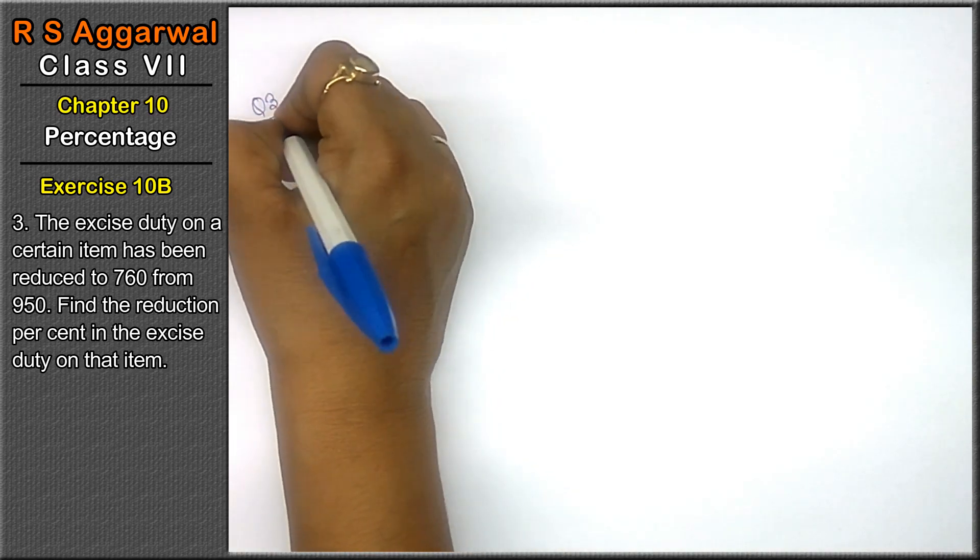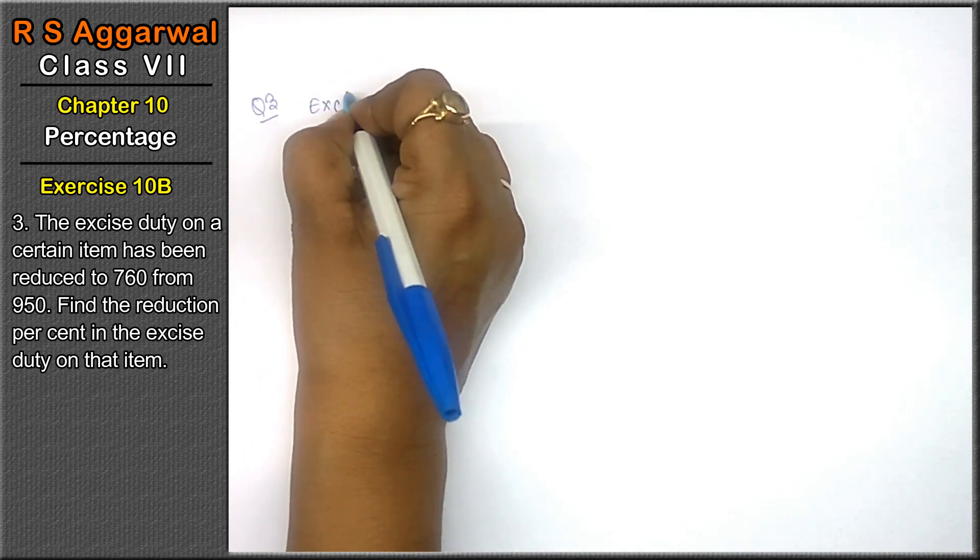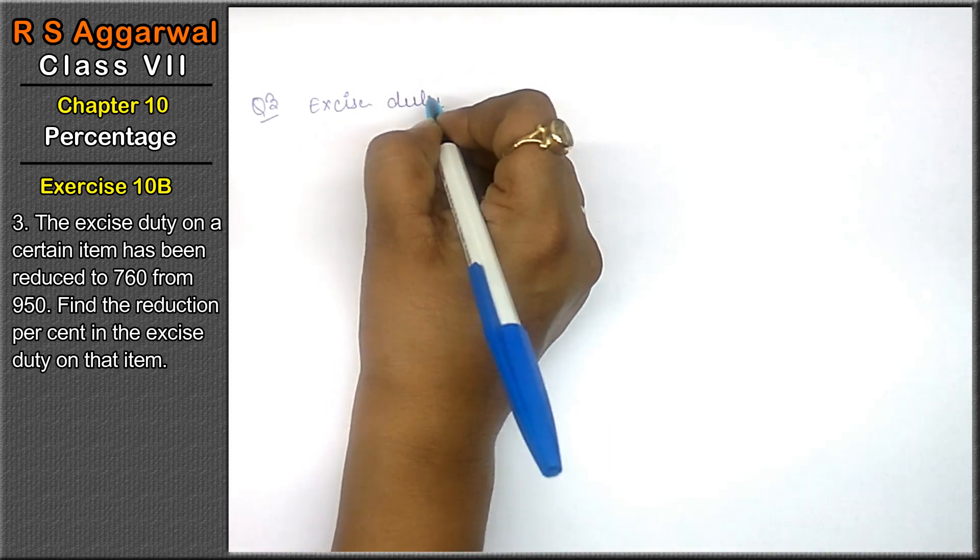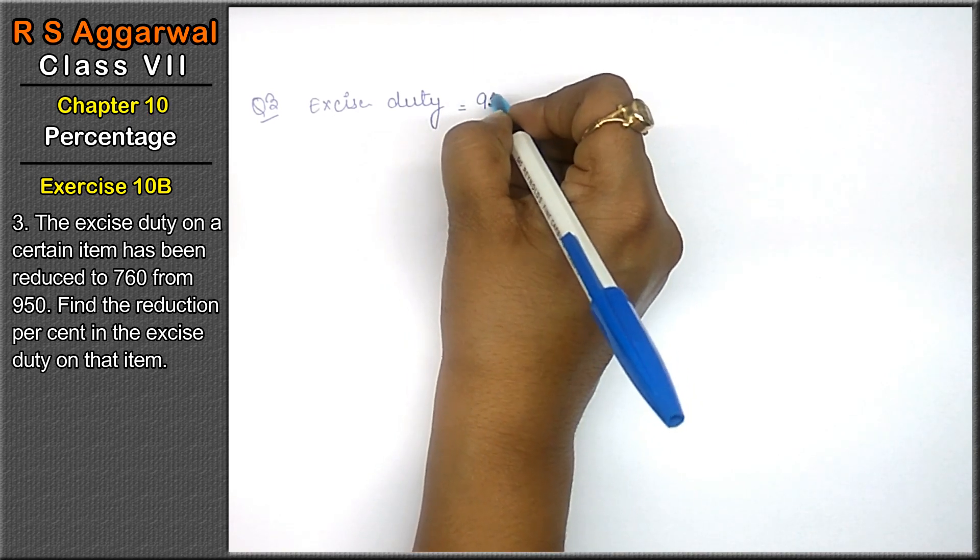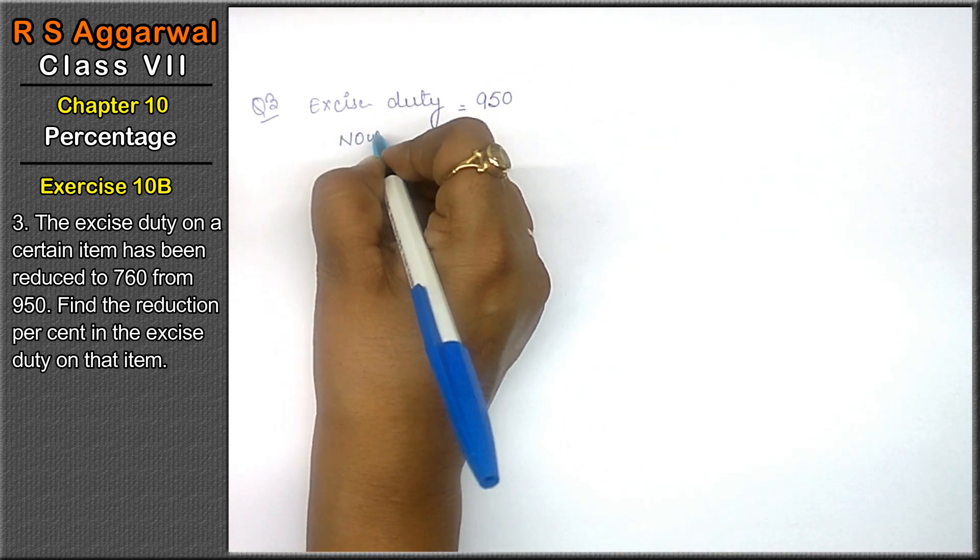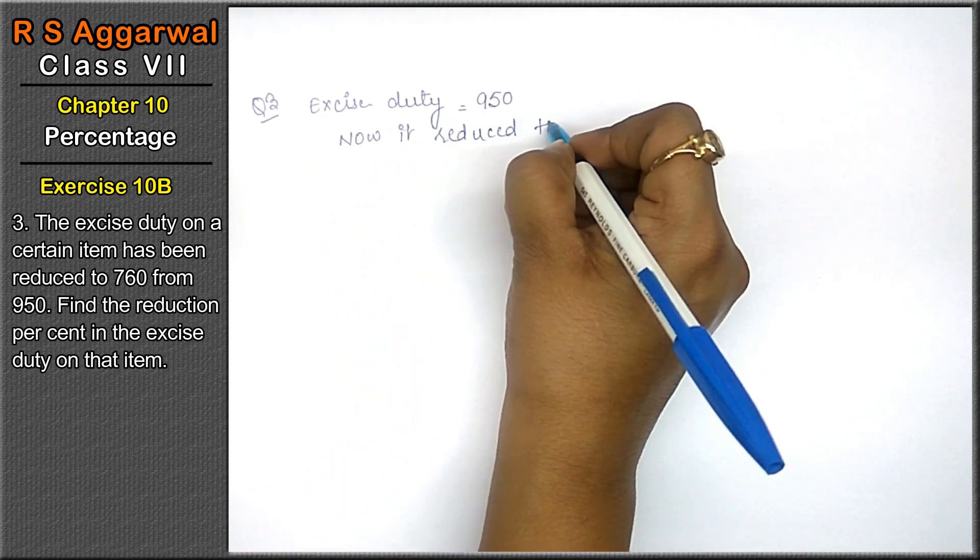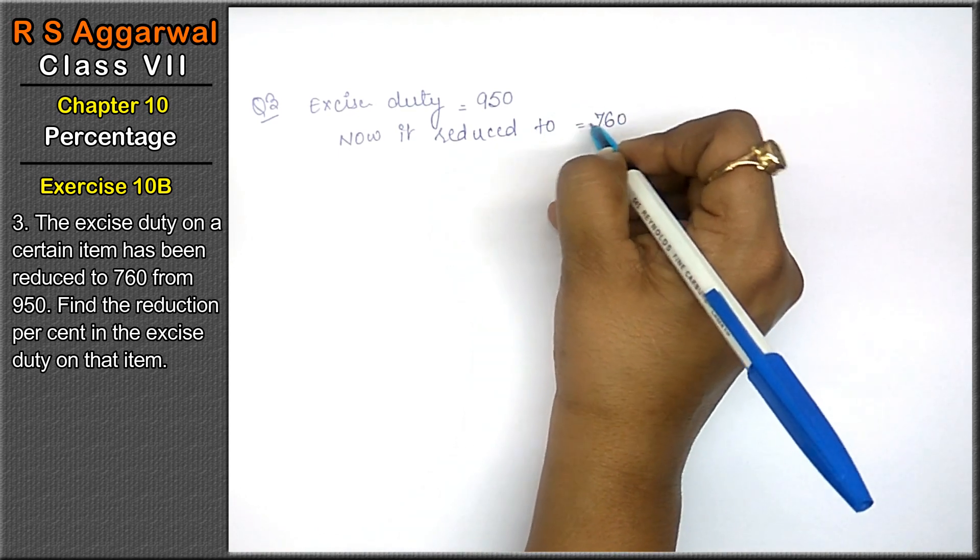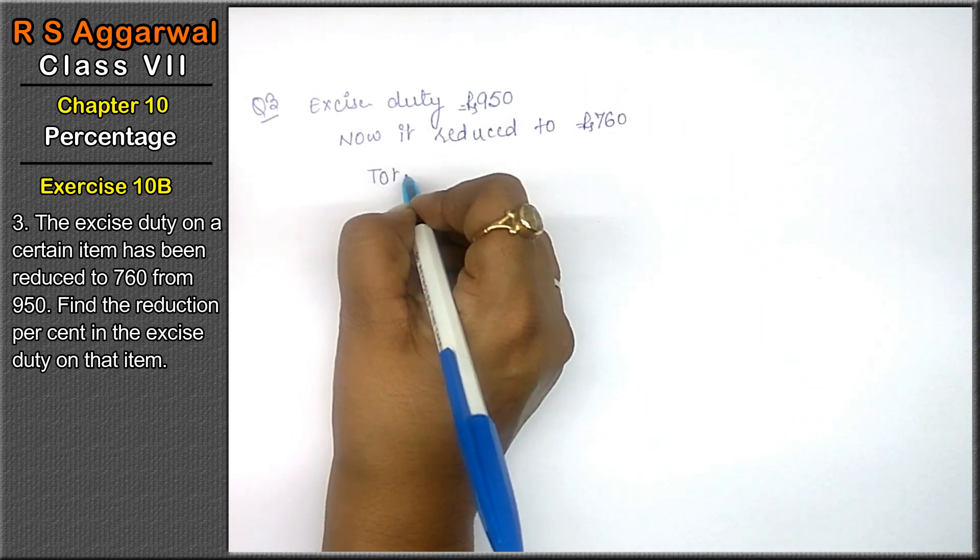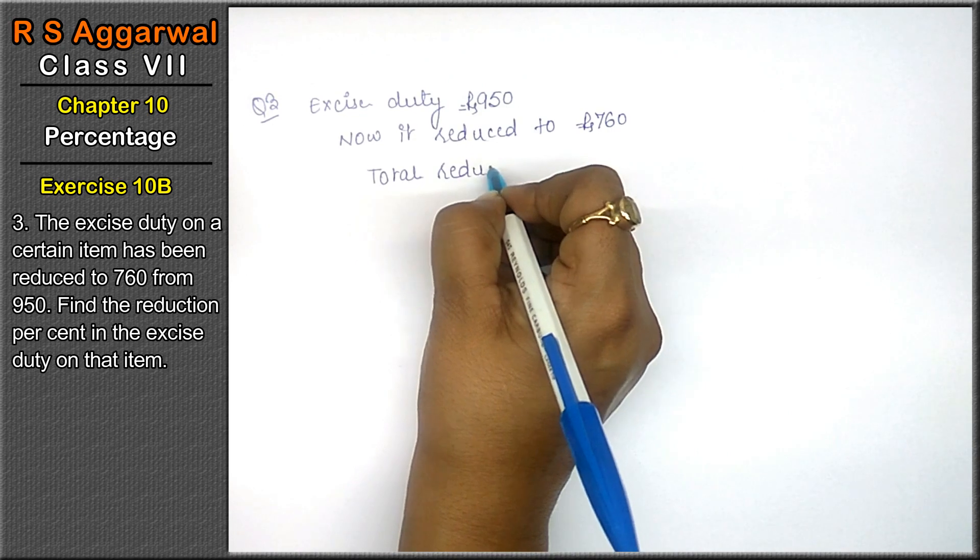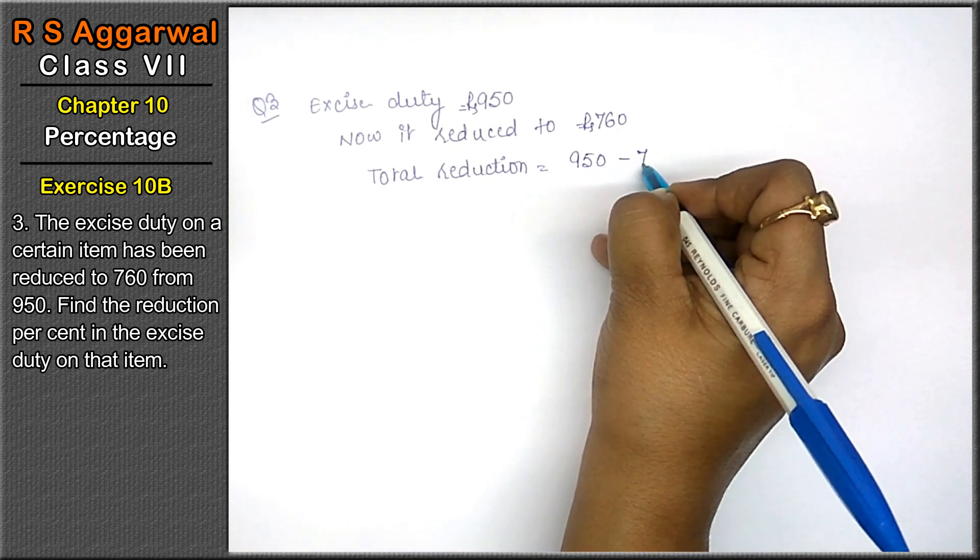Question number 3. Our excise duty first was 950. Now it reduced to 760. How much is the total reduction? The total reduction is 950 minus 760.